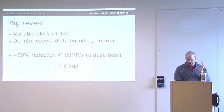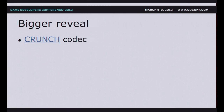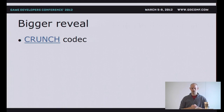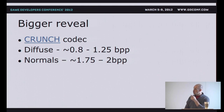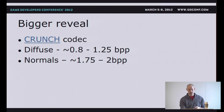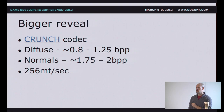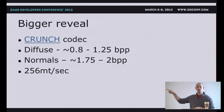After completing this research, a couple days later Rich Geldrich released his Crunch codec — his version of texture compression — online with a permissive license. He gets about 0.8 to 1.25 bits per pixel for diffuse textures, and 1.75 to 2 bits per pixel for normal textures, which is still remarkable — cutting edge for game textures without a full DXT or JPEG 2000 stack. The key difference is he gets about 256 megatexels per second decompression on a single core; I was only getting 93, so he has some optimizations that really change the game. His code is available on code.google.com.